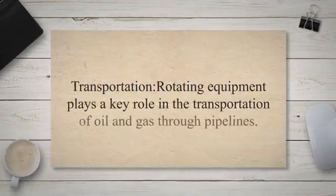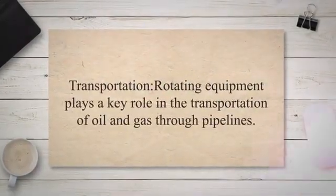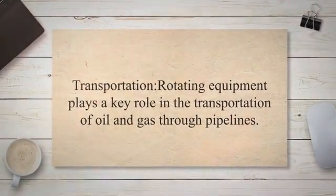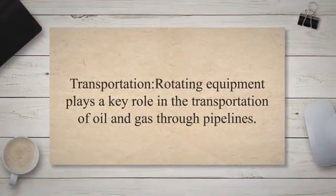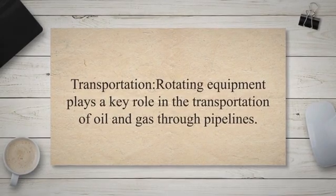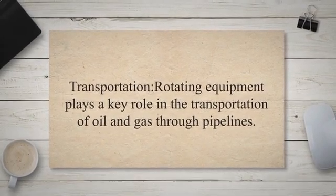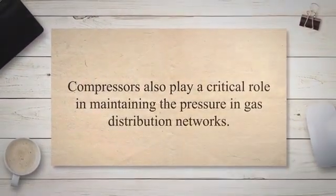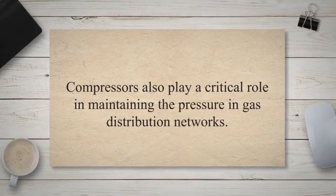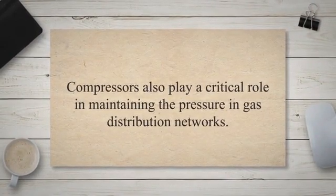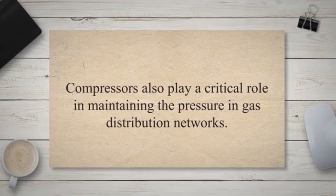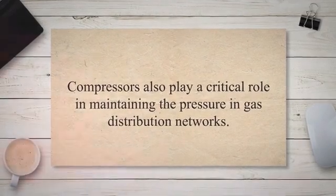Rotating equipment plays a key role in the transportation of oil and gas through pipelines. Compressors maintain the pressure required for long-distance pipeline transport, while pumps assist in loading and unloading at terminals. In the distribution phase, pumps are essential for moving refined products from storage facilities to end-users, and compressors play a critical role in maintaining pressure in gas distribution networks.